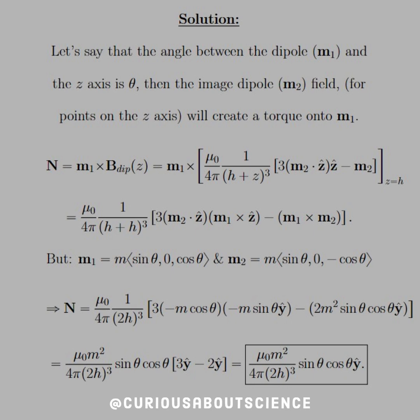The cross product can be pushed inside the brackets because mu over 4 pi, 1 over (h + z)^3 is all a constant, has no vector direction. Note that m2 dot z hat is a scalar. So we're only taking the cross product of m1 with the z hat and m1 with m2. The m is charged as symmetric, but m1 is equal to m(sin θ, 0, cos θ) and m2 is the same thing except now we're negative cosine. Let the trig do the work for you.